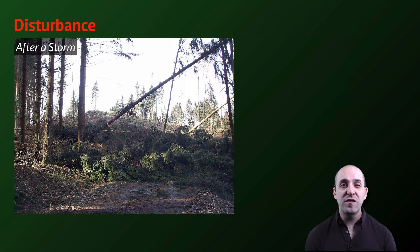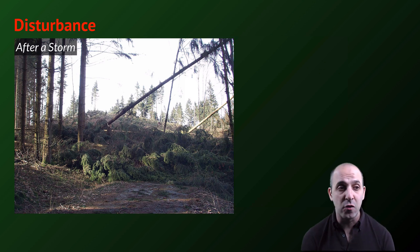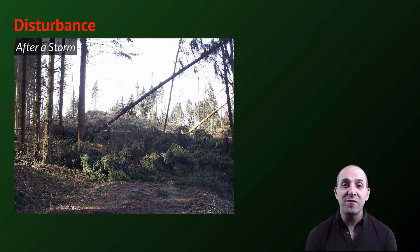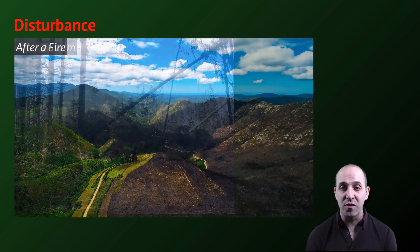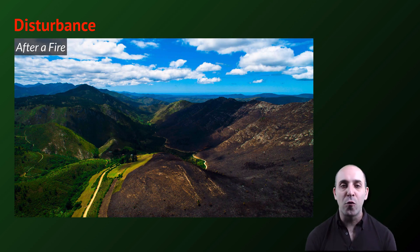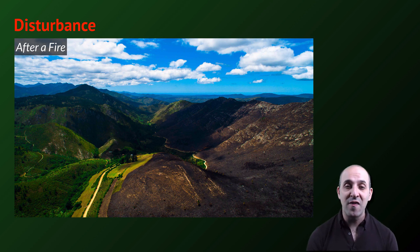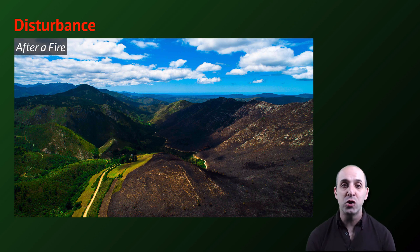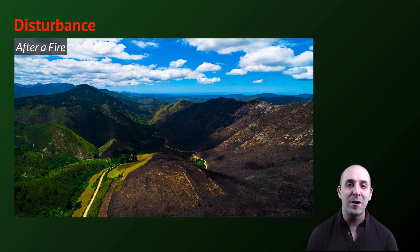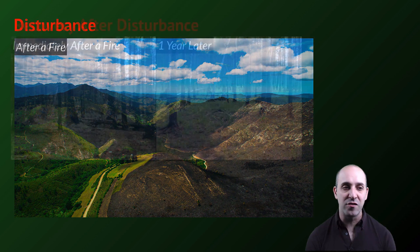The other major types of changes we see in ecosystems come about as a result of disturbances — anything that disrupts the overall structure of the ecosystem. This is a forest ecosystem after a storm disturbance, and here is another mountainous forest ecosystem after a fire. These disturbances are going to drive a series of changes, not only due to the disturbance itself, but due to the changes that will happen after it as the ecosystem recovers.